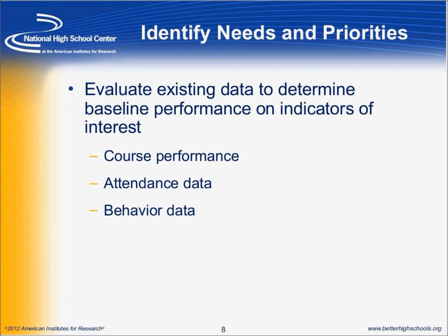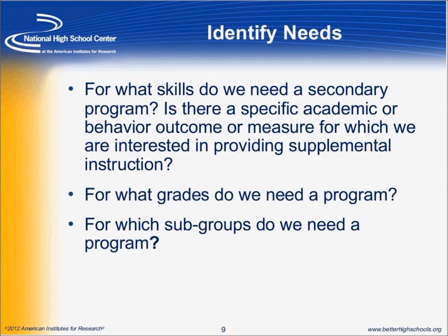Within the early warning system tool, your indicators are providing you data on course performance, attendance data, and behavior data. These might be topics you look at in terms of your needs and priorities for your students. When thinking about identifying your needs, you want to be clear about what skills you're trying to address when choosing your instructional program. What grades do we want this focused on? Is there a specific subgroup? These are just a few questions you might want to ask yourself when defining and identifying your specific needs for your students.